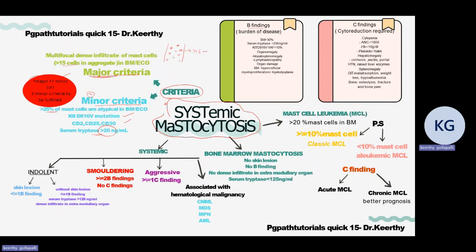B findings represent burden of disease. These include: KIT mutation with variant allele fraction (VAF) of more than 10% identified by next-generation sequencing (NGS); serum tryptase levels more than 200 nanograms per milliliter; organomegaly such as hepatosplenomegaly or lymphadenopathy; and more than 30 percent mast cells in the bone marrow. The VAF means that among 100 sequenced strands, at least 10 strands should show the mutation to be considered significant.